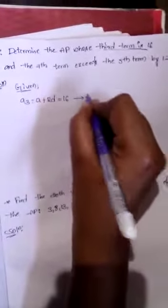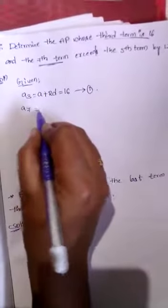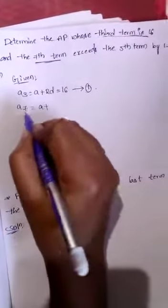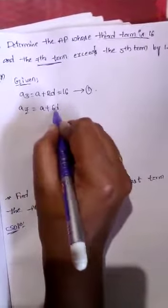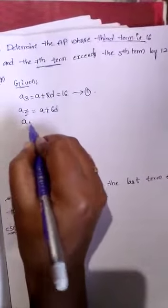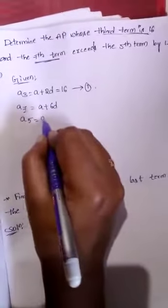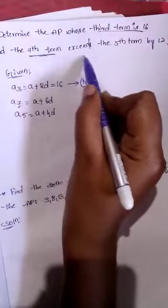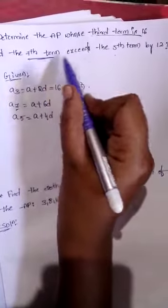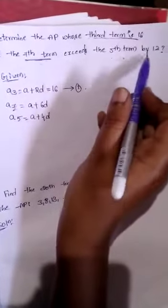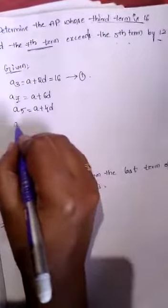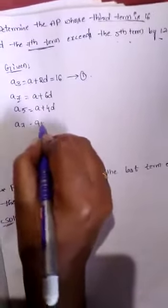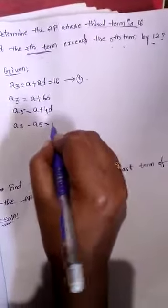The 7th term, A7, equals A plus (7 minus 1)D, which is A plus 6D. The 5th term equals A plus (5 minus 1)D, which is A plus 4D. Given that the 7th term exceeds the 5th term by 12, it means the 7th term is more than the 5th term by 12. So A7 minus A5 equals 12.